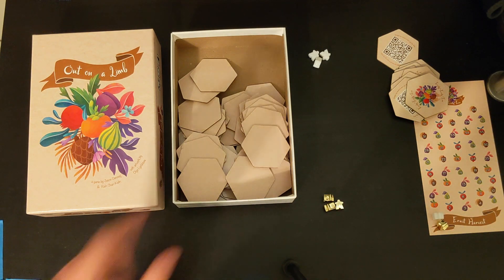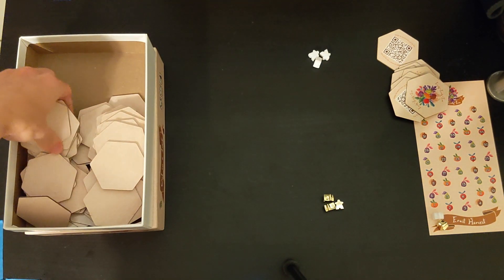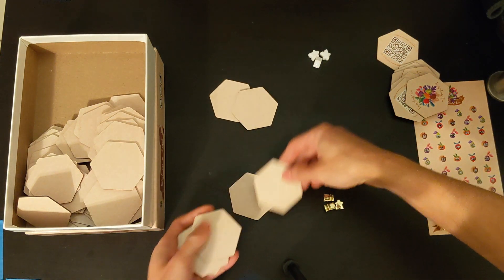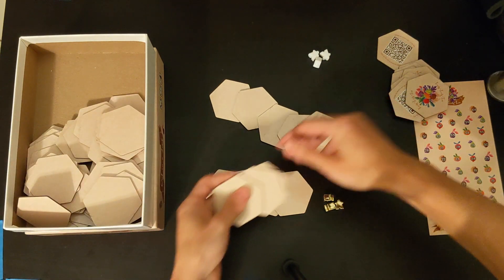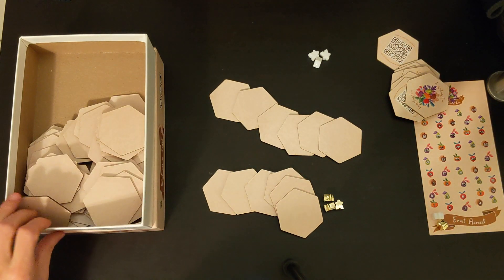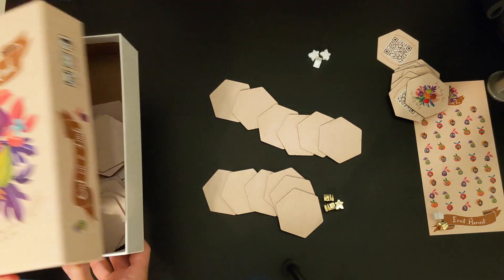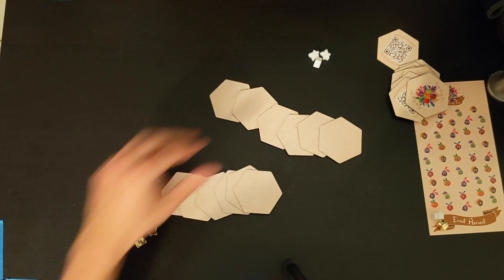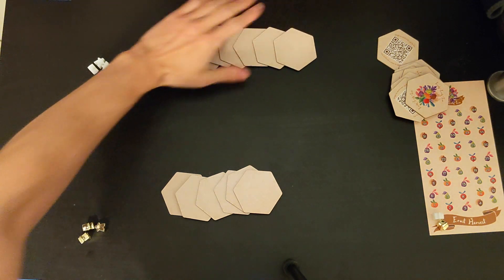Deal six tiles to each player. It doesn't really matter how many people are playing, it's always six tiles. So I'm going to deal out my tiles. I'll go back and forth just to randomize a little bit more. That's six tiles for each player. And actually, we don't need these tiles anymore or this box. So each player has their meeples and their hand.